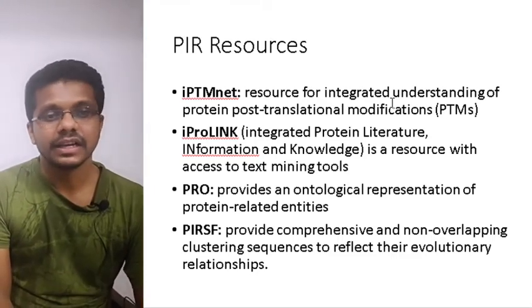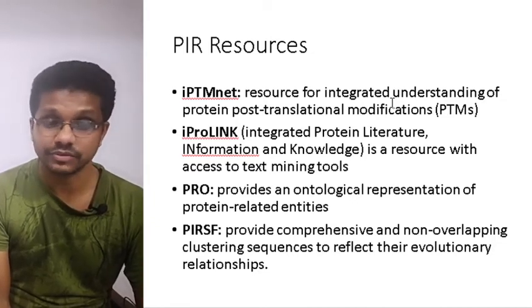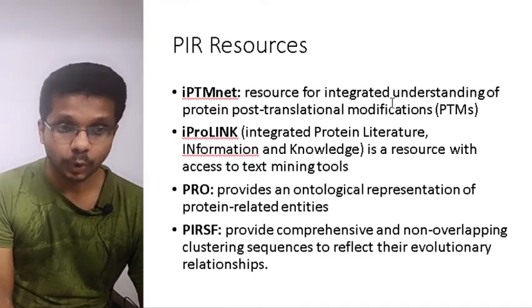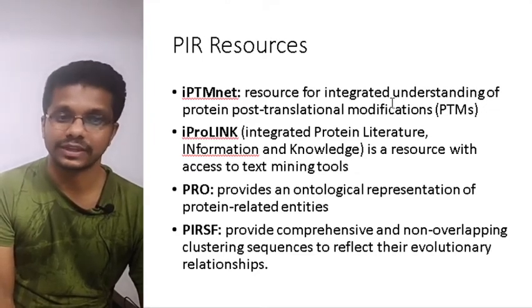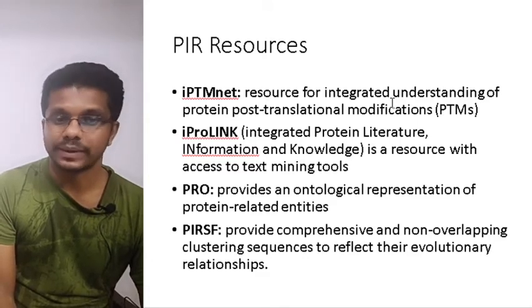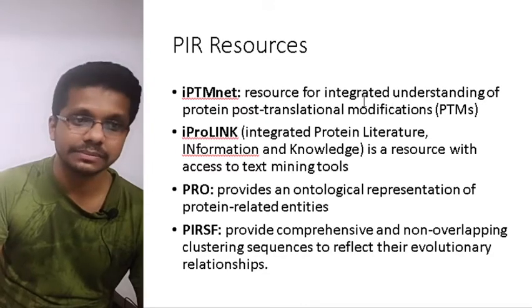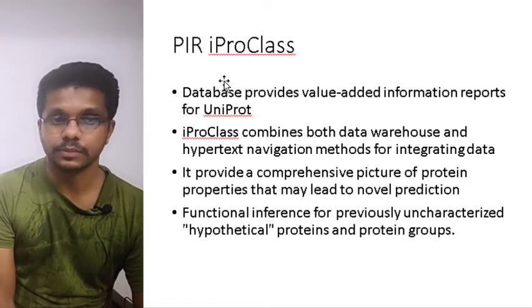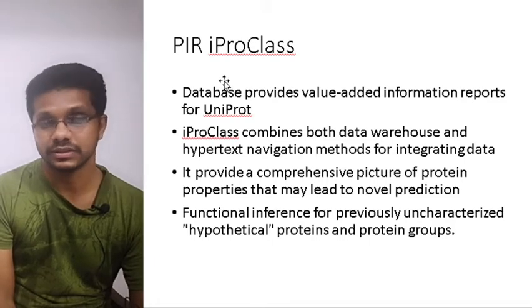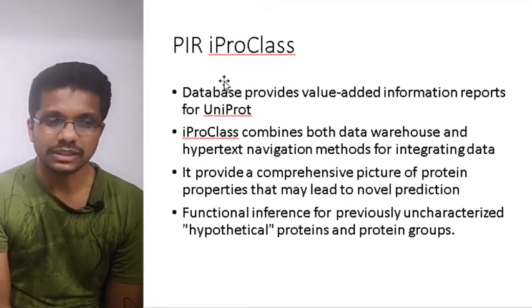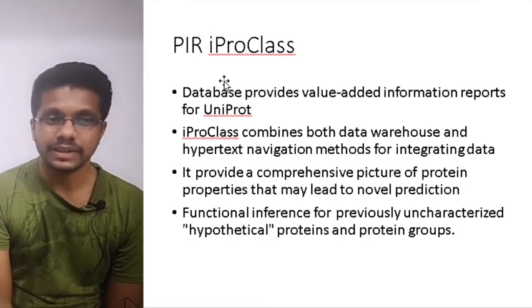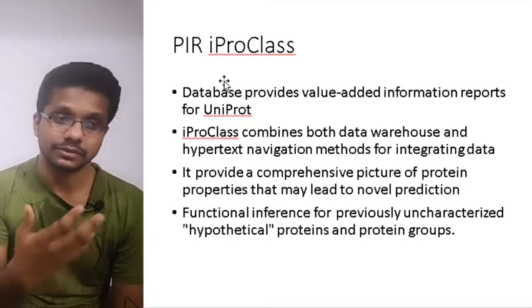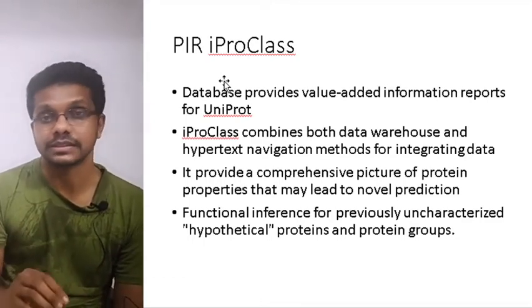PIR has several resources: iPTM-NET for studying post-translational modifications; iProLink, a resource to assess text-mining tools; PRO, which provides ontological representation of proteins and related entries; PIRSF, providing comprehensive non-overlapping clustering of sequences to reflect evolutionary relationships; and iProClass, a major tool that provides value-added information to help characterize and find new functions of already discovered proteins — a sophisticated way of finding novel functions or novel domains.